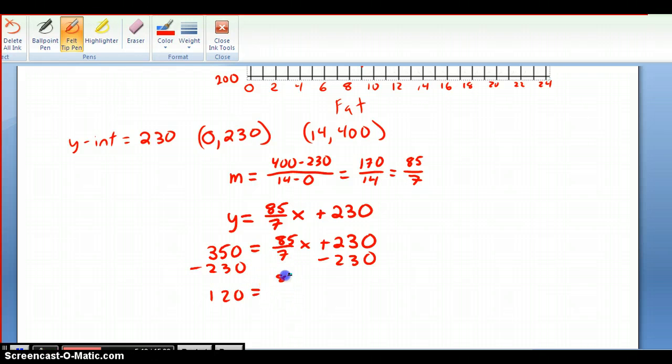And now I need, how is x not by itself? It's being multiplied by this fraction. So what do I need to do? I need to divide by that fraction, or in other words, multiply by its reciprocal and do that to both sides here. So in other words, I'm going to have the 7 over 85 times 120 over 1.